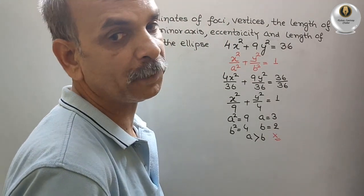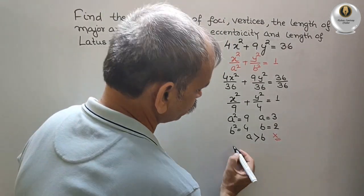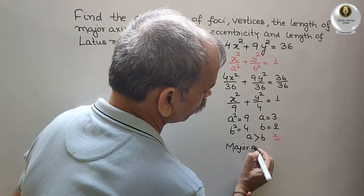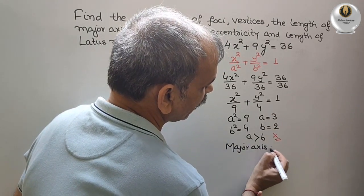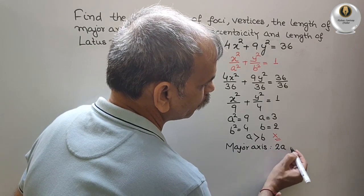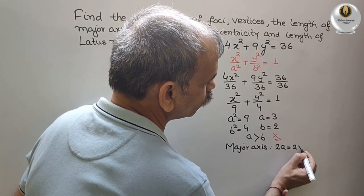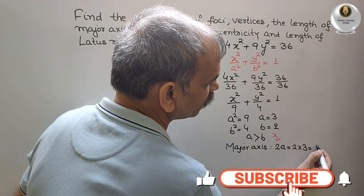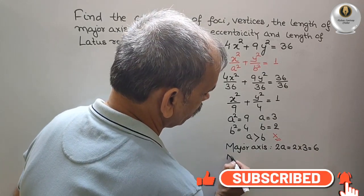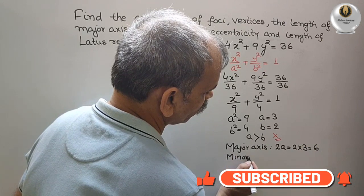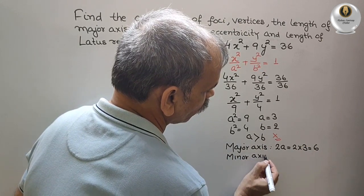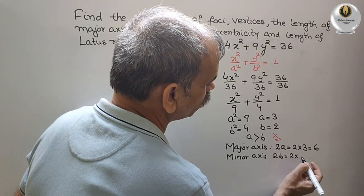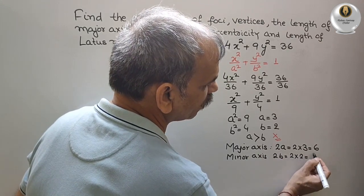So what is your major axis? Major axis is your 2a. That is equal to 2 into a is 3, that is equal to 6. Minor axis is 2b. That is equal to 2 into 2, that is equal to 4.